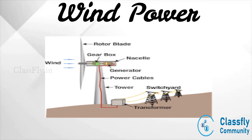As the speed of wind increases with height from the earth's surface, the blades are mounted high above the earth's surface by means of a pillar or tower. In operation, the kinetic energy of the air causes the blades to rotate. Since the rotational speed of the blades is slow, a gearbox is used to increase the rotational speed of the shaft to the required range. The shaft then drives the generator and hence electricity is produced.